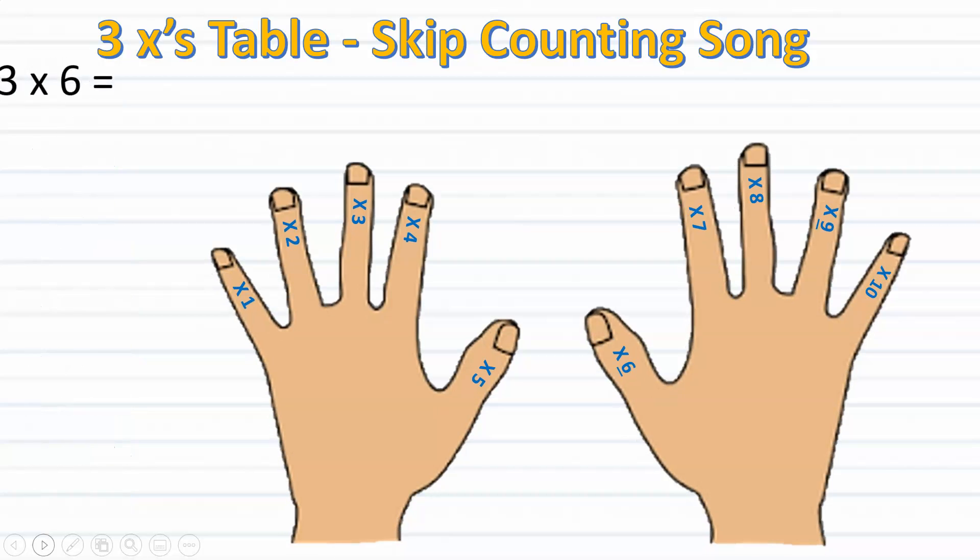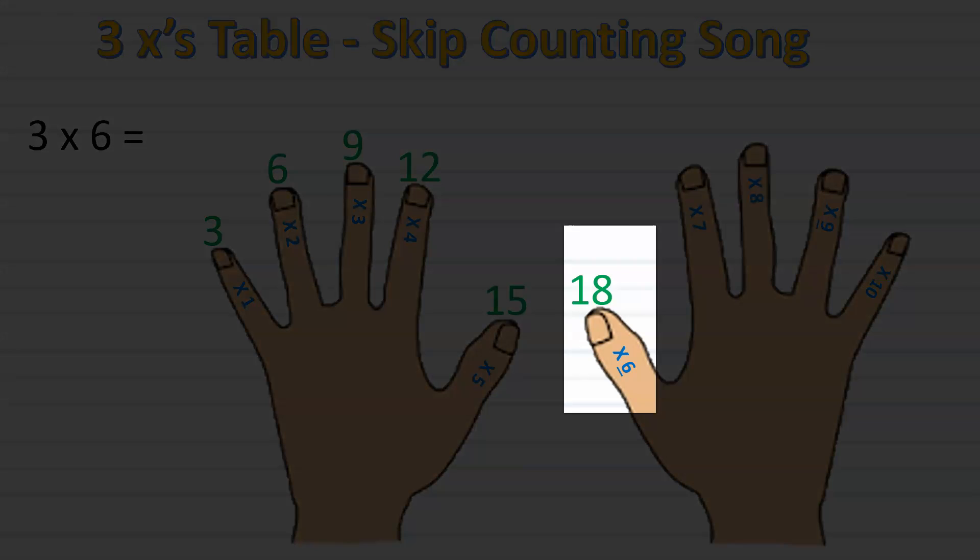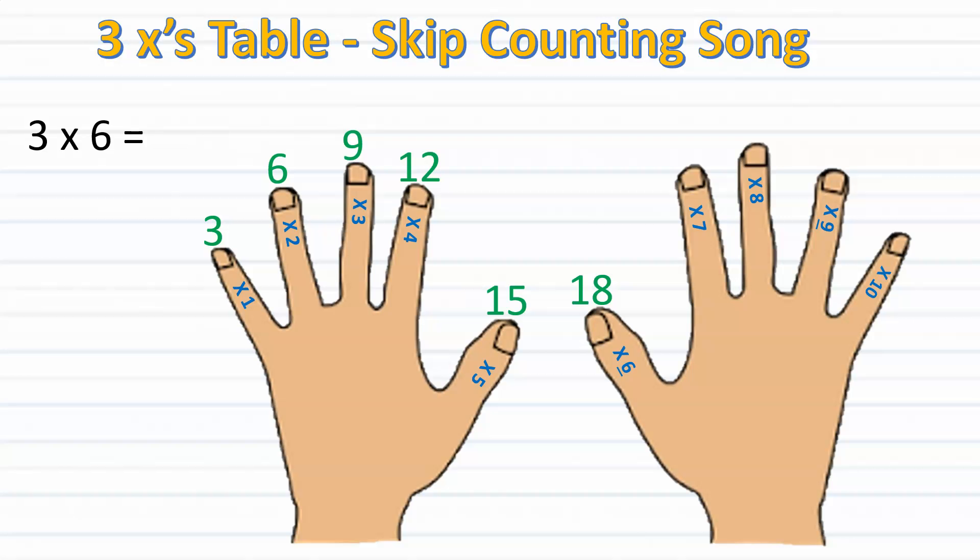So here's our first problem. Three times six. Let's use the skip counting song to help us out. Three, six, nine, twelve, fifteen, eighteen. Notice that I stopped singing the skip counting song once I reached the sixth finger. Since I'm skip counting by threes, I'm going to keep counting by threes until I get to the sixth finger. So therefore I know that six times three is eighteen.